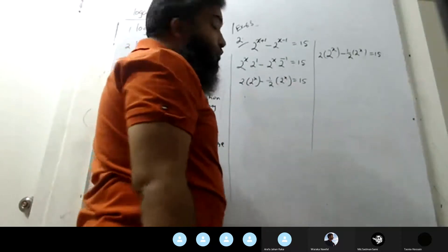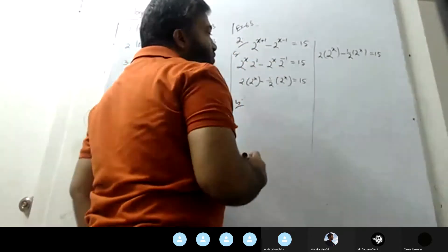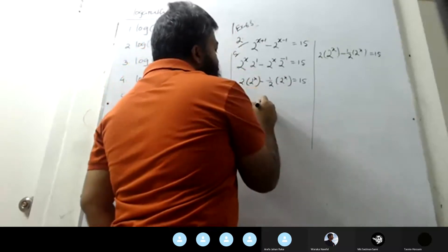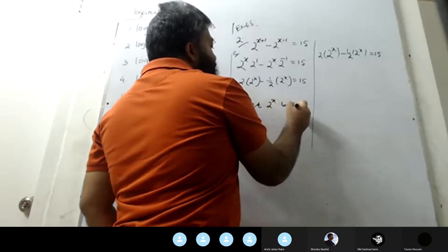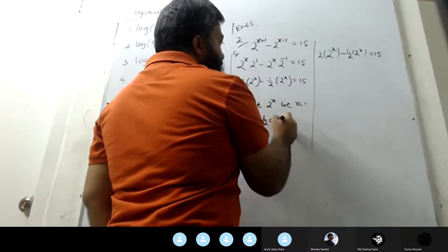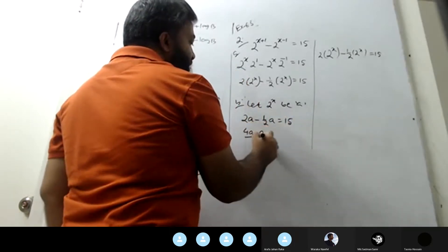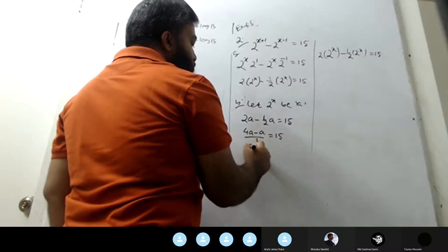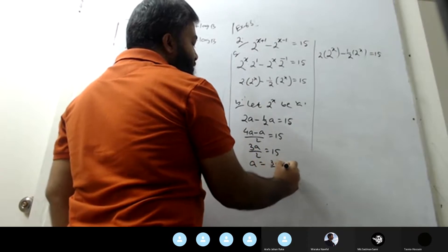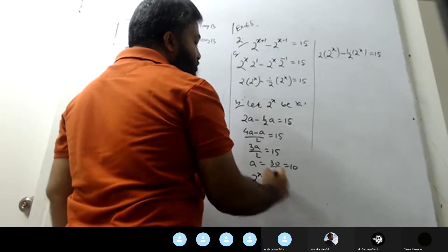Find the value of 2 to the power x. Let 2 to the power x equal a. Then the equation becomes 2a minus half a equals 15, which is 4a minus a divided by 2 equals 15, so 3a by 2 equals 15, giving a equals 10. Therefore 2 to the power x equals 10.